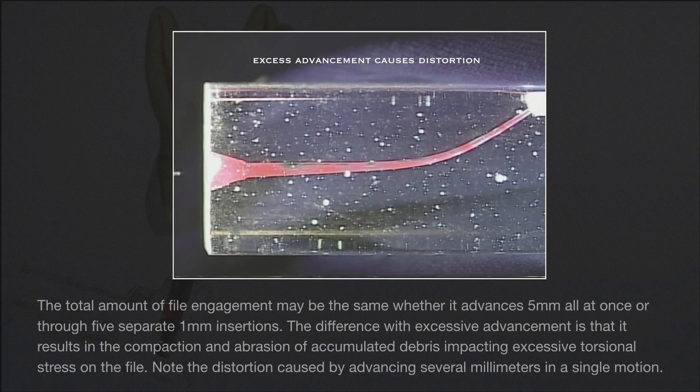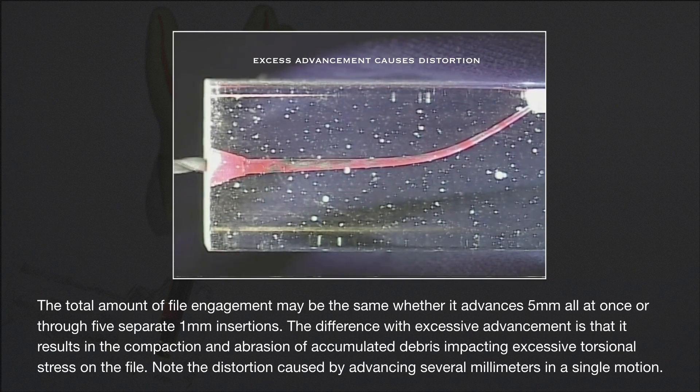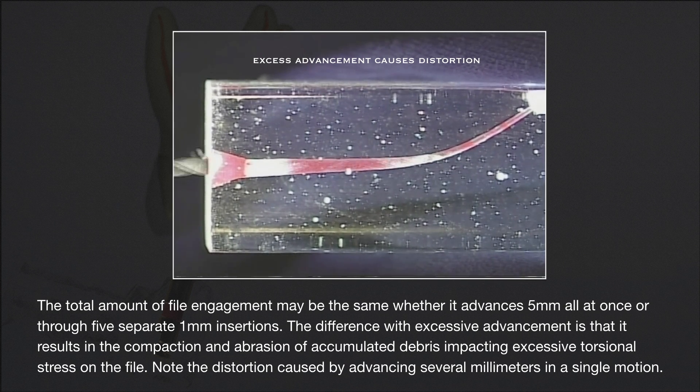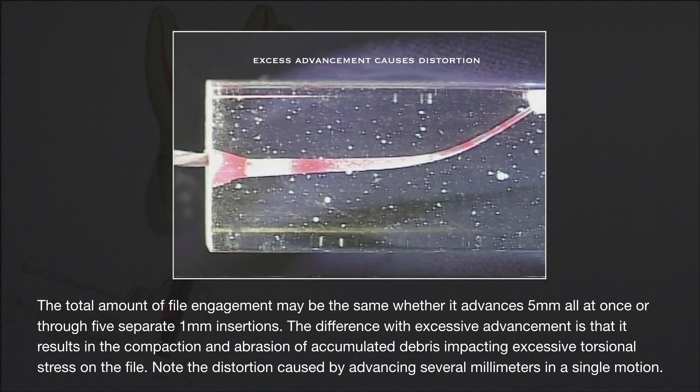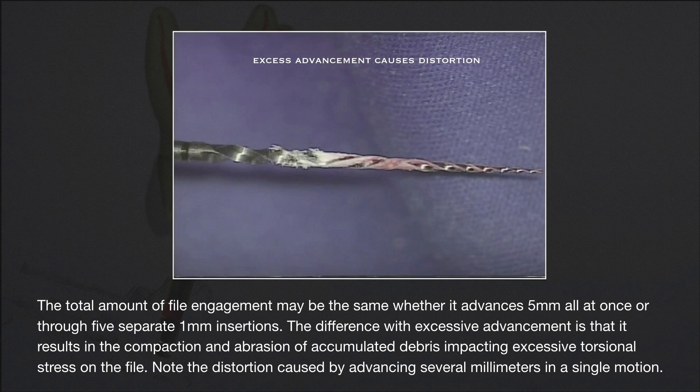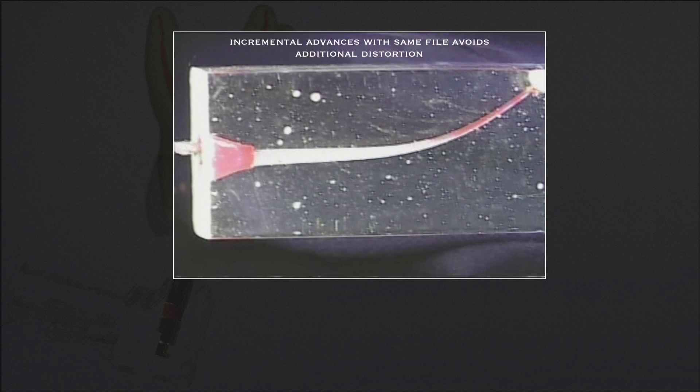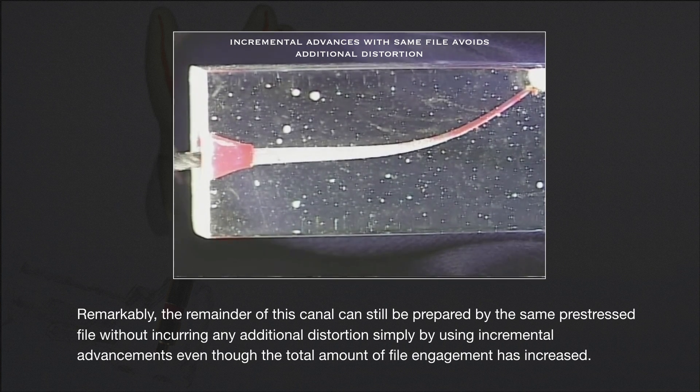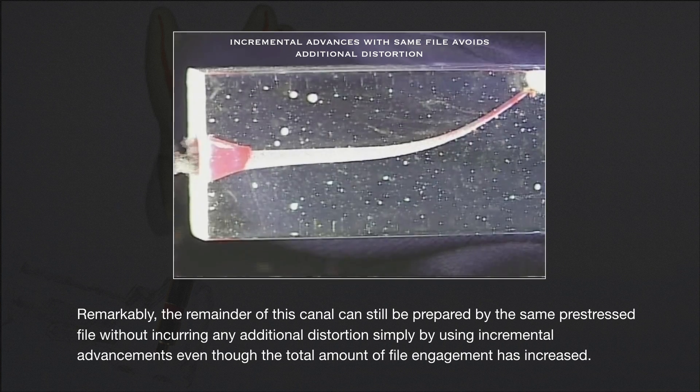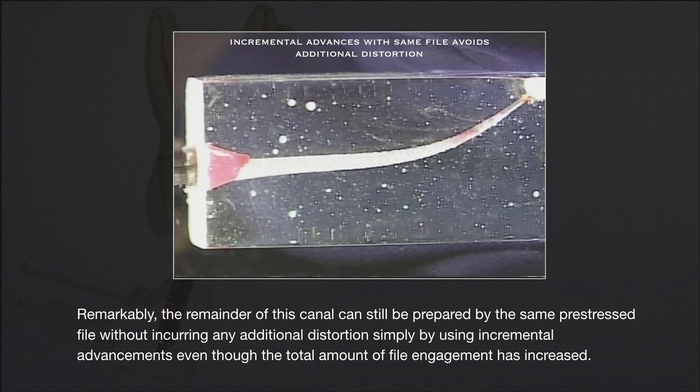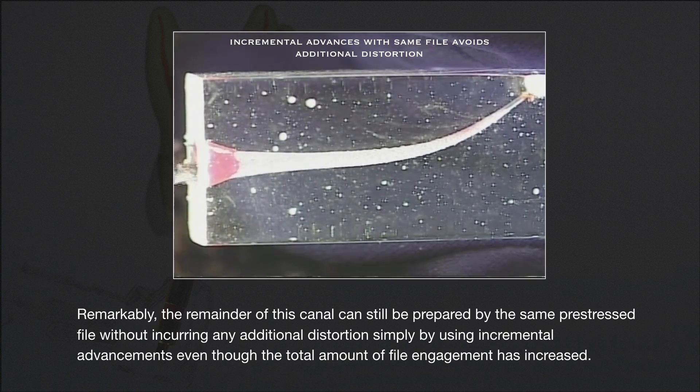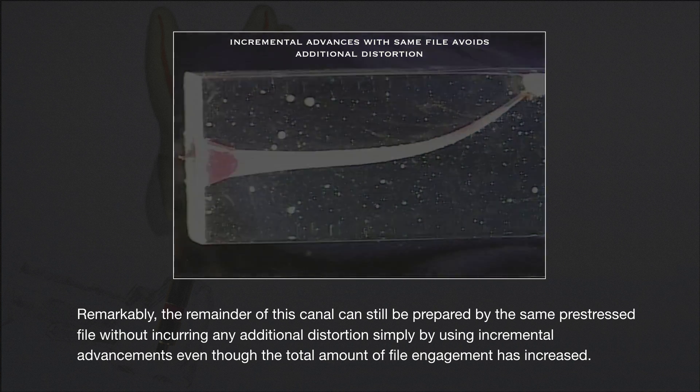The total amount of file engagement may be the same whether it advances 5 mm all at once or through 5 separate 1 mm insertions. The difference with excessive advancement is that it results in the compaction and abrasion of accumulated debris impacting excessive torsional stress on the file. Note the distortion caused by advancing several millimeters in a single motion. Remarkably, the remainder of this canal can still be prepared by the same pre-stressed file without incurring any additional distortion, simply by using incremental advancements, even though the total amount of file engagement has increased.